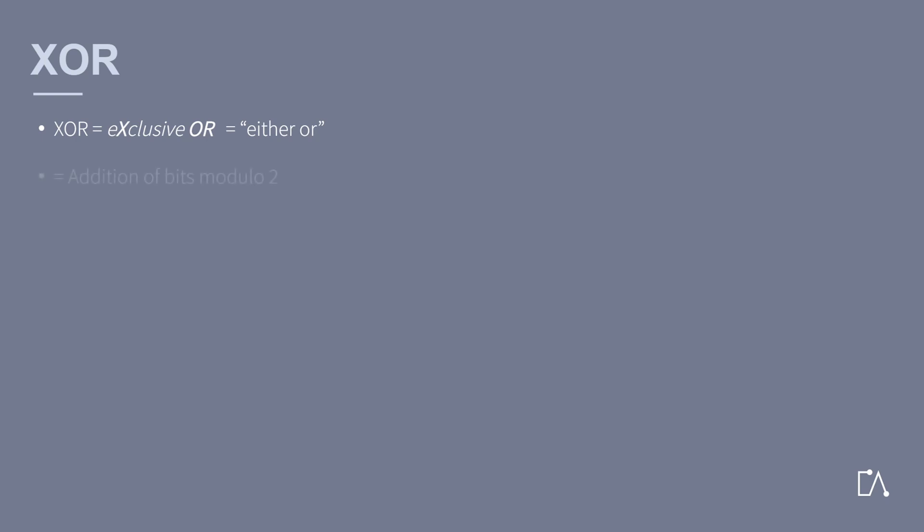The term XOR stands for the expression exclusive OR. Another meaning for this would be 'either OR.' You might have also already heard of the XOR gate in some context. By an XOR operation we usually think of the addition of bits modulo 2. In practice, this works as follows: you usually do an XOR operation for each individual number of the bits.